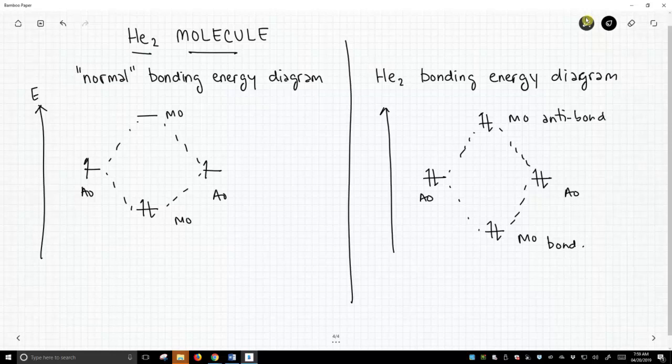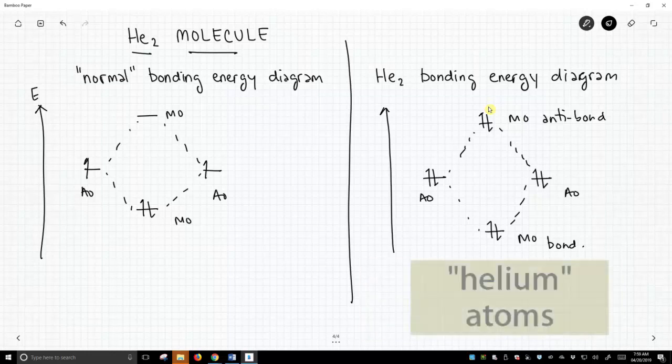Energetically, there's no benefit. We have electrons going down, that's a good thing. We have electrons going up, that's a bad thing. So there's no benefit to having two hydrogen atoms coming together, and therefore they don't. They stay as hydrogen atoms.